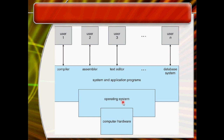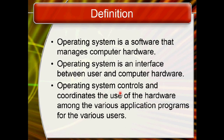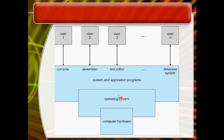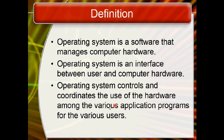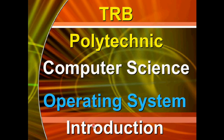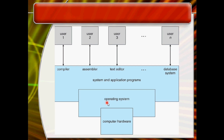Another definition: the operating system controls and coordinates the use of hardware among various application programs for different users. So the operating system controls and coordinates the use of computer hardware among various system and application programs for different kinds of users.